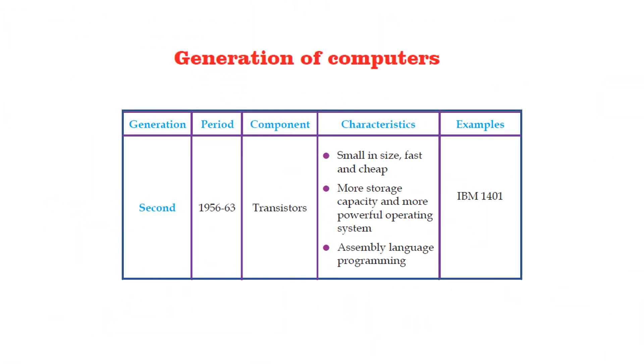The computers made in the period 1956-63 are said to be the second generation computers. These computers used transistors. Compared to the first generation computers, these computers were small in size, fast and cheap. They had more storage capacity and more powerful operating system. And these computers could be programmed using assembly language. One of the examples of the second generation computer is IBM 1401.